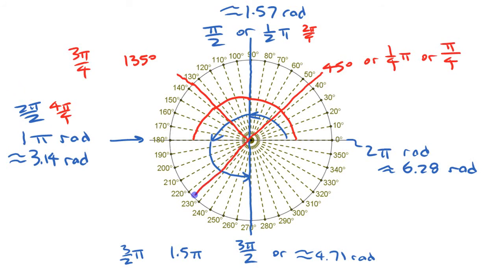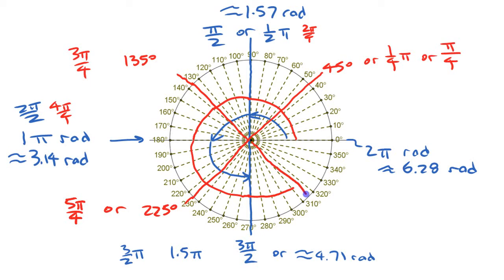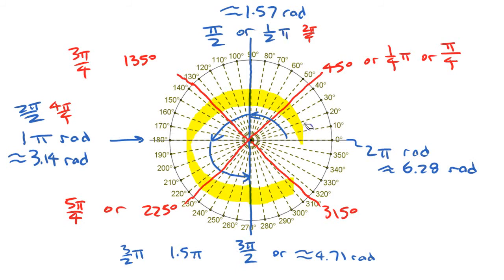Continuing that pattern: 225 degrees is five pi over four, or one and a quarter pi. Then 315 degrees — counting from the start: one, two, three, four, five, six, seven pi over four. So all the angles related to 45 degrees use pi over four as their base fraction.